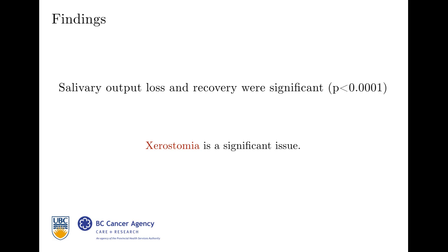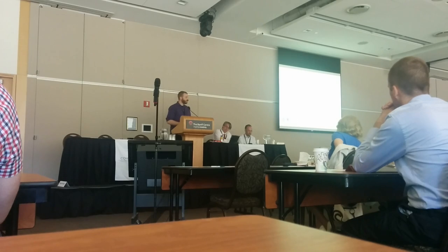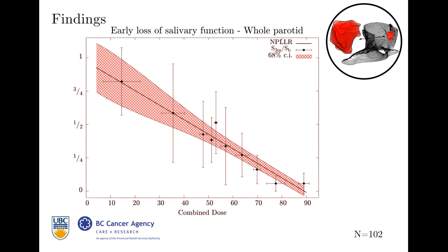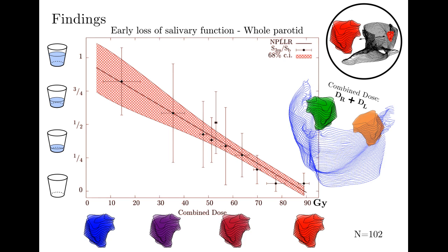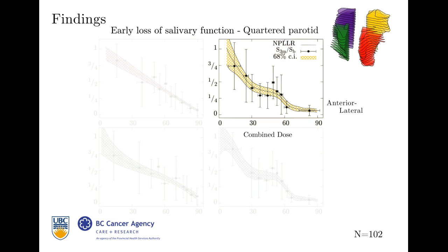Salivary output loss and recovery were both significant, and yes, xerostomia is a significant issue in this cohort. Let's get on to outcomes and dose. This is not for quadrants yet — this is for the whole parotid. That straight line looks linear, but it's not. It's a non-parametric, local, linear regressed line, so it could be curvy — it just happened to work out that way. On the left axis we've got spit in the cup — salivary loss. On the x-axis, dose to the parotid. Blue is cold, red is hot. Nice correlation — very linear. Those units are grey, and who got 90 grey? Well, this is combined dose — literally dose on the left plus dose to the right.